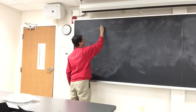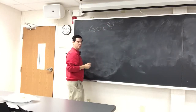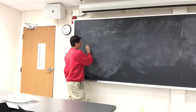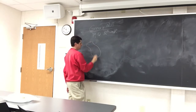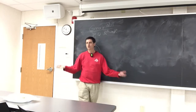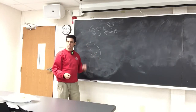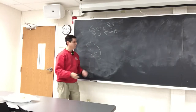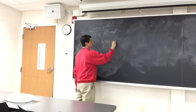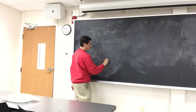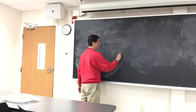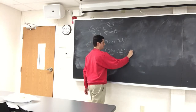Green's theorem is the following. Let P and Q be nice functions from R² to R. If we have a nice curve gamma and a nice region omega inside — maybe a smooth or piecewise smooth simply connected curve — then the line integral along gamma of P dx + Q dy equals the double integral over omega of (∂Q/∂x − ∂P/∂y) dx dy.